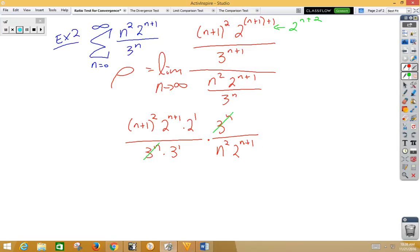And notice our 3 to the n will cross out, and notice our 2 to the n plus 1 will cross out. So we're taking the limit. Rho is the limit as n approaches infinity. On the top, we have a 2 times the quantity n plus 1 squared over a 3 n squared.